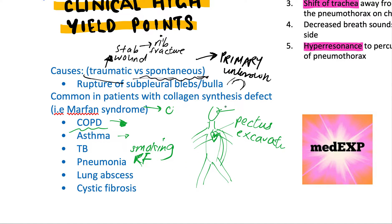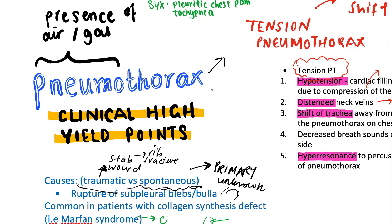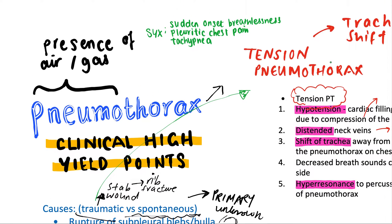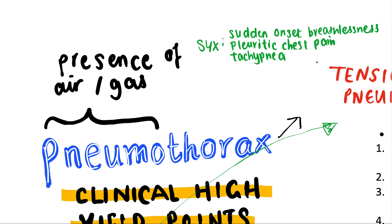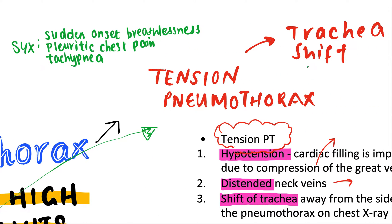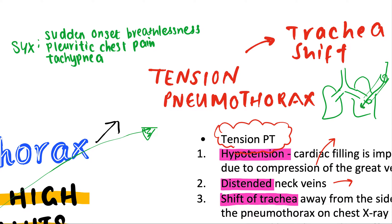There is a difference in presentation between tension pneumothorax and the rest. Most commonly, a traumatic wound will cause a tension pneumothorax — and it will make sense once I explain. So when it comes to a tension pneumothorax: imagine there is an open wound due to any kind of trauma, and suddenly all this air is coming in to the pleural space and pleural cavity.